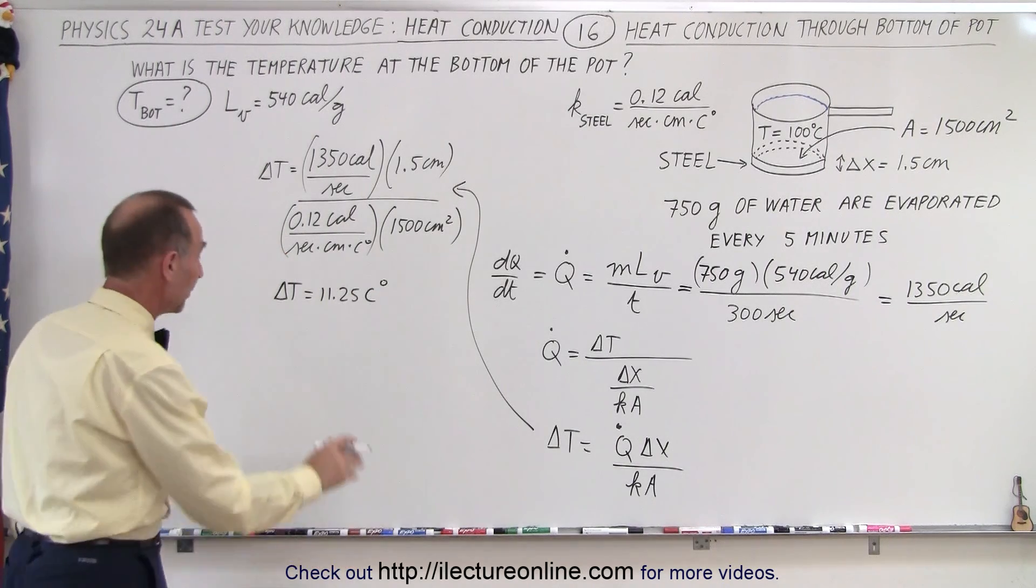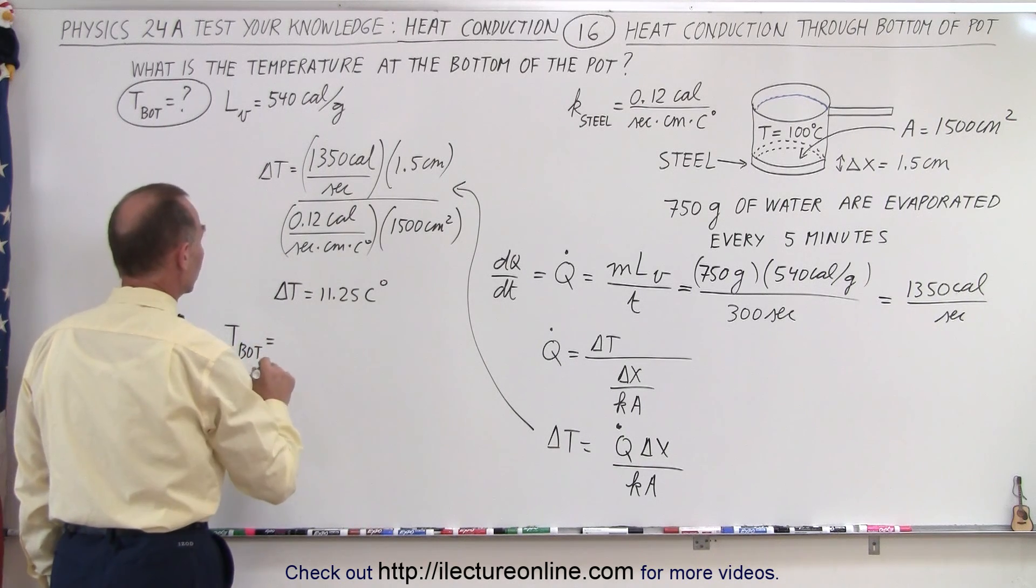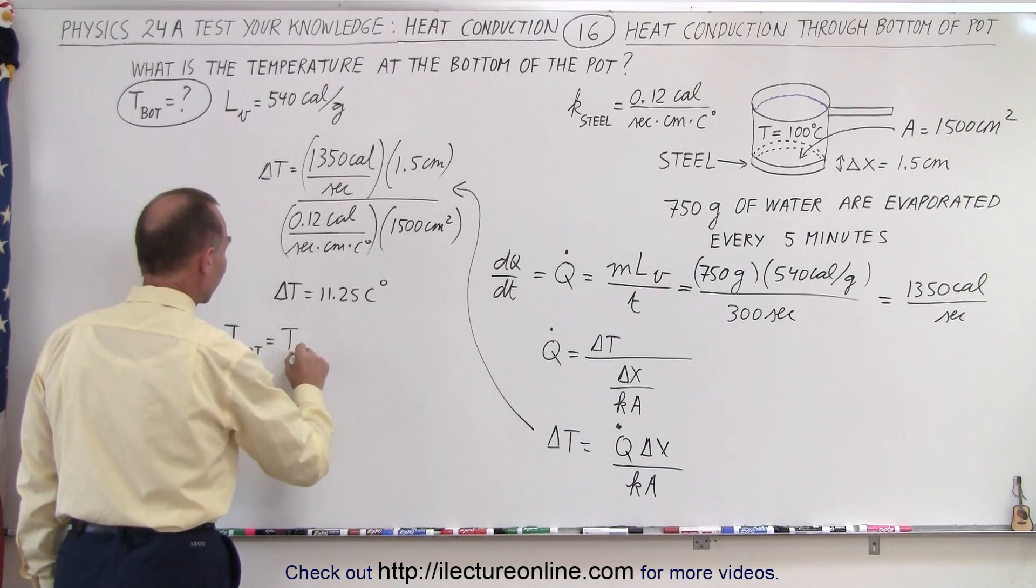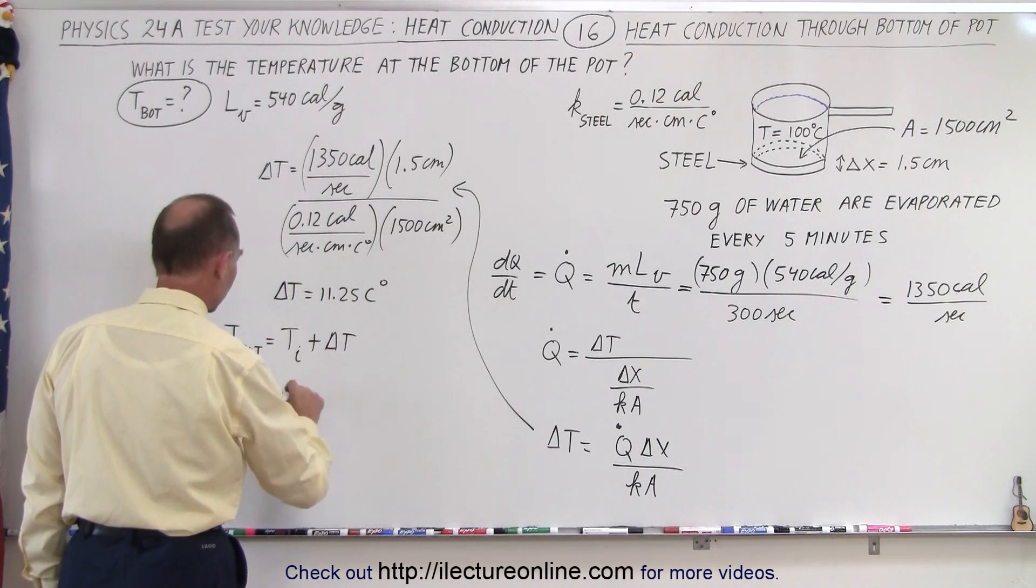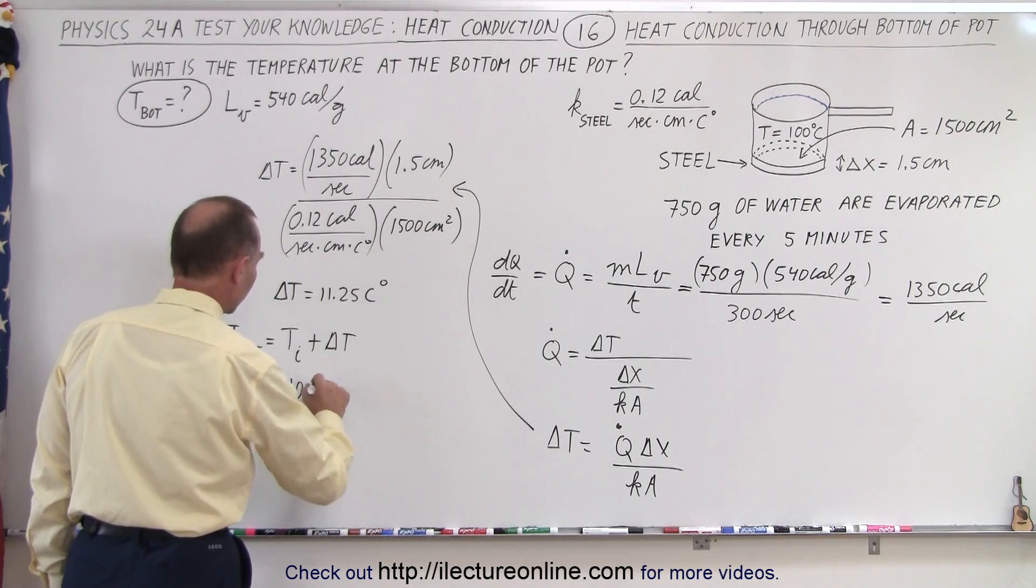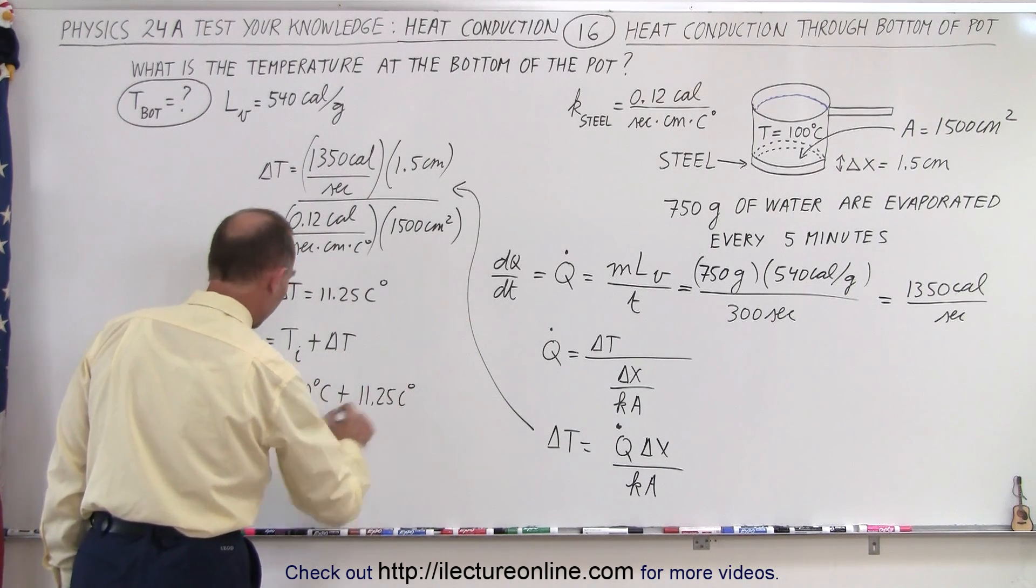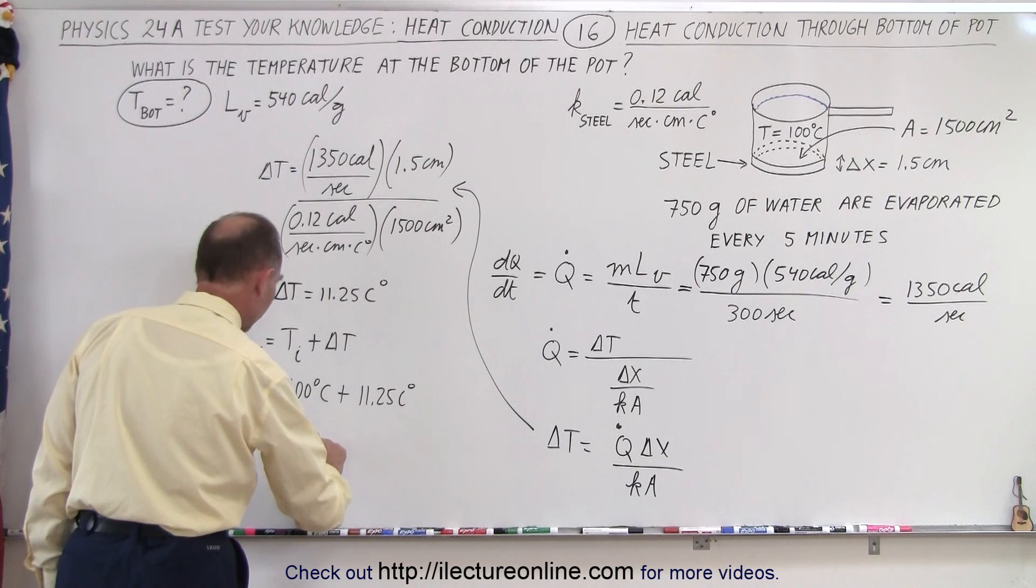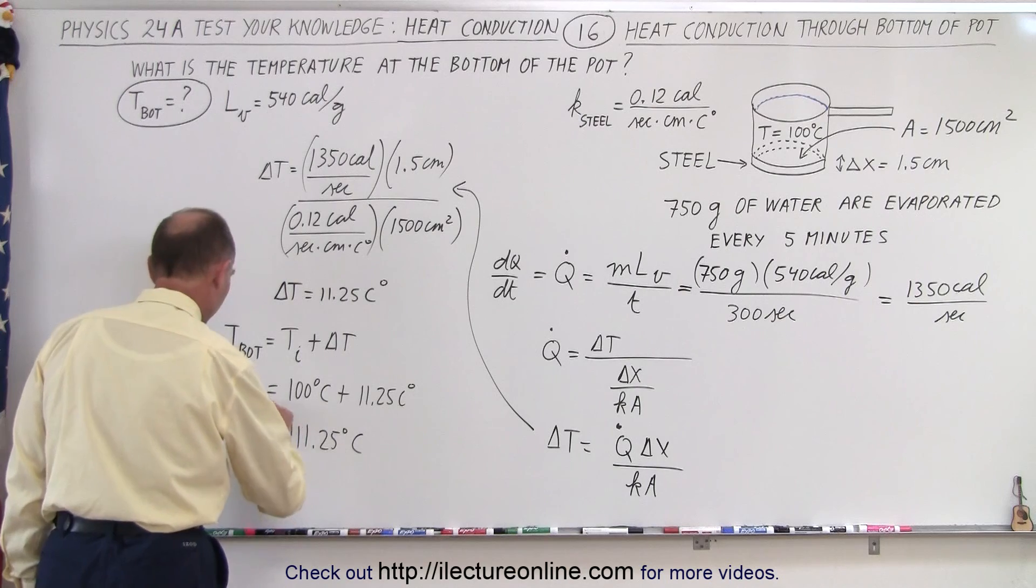Now the temperature at the bottom of the pot, t at the bottom, would be equal to the temperature on the inside of the pot plus delta t. The temperature inside is 100 degrees centigrade plus 11.25 centigrade degrees is equal to 111.25 degrees centigrade as the temperature at the bottom of the pot.